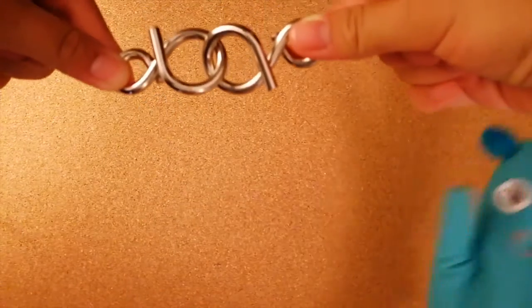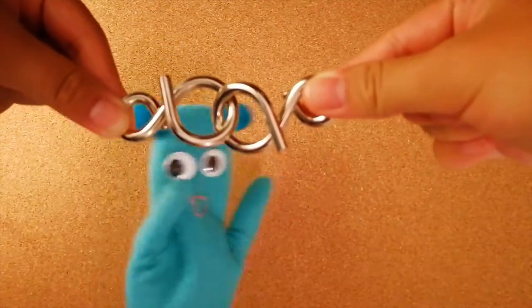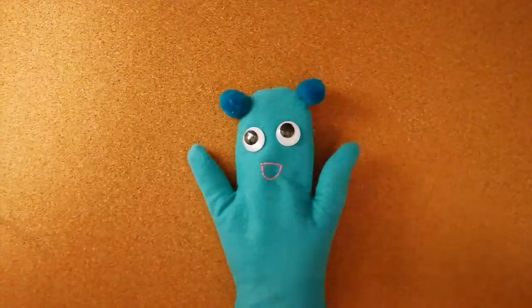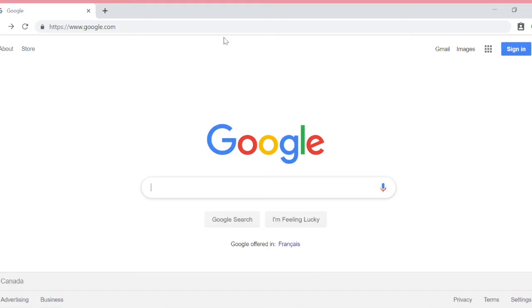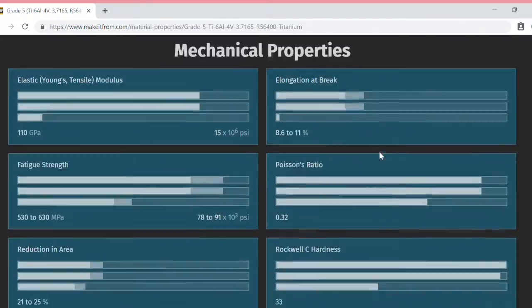Think of climbing a mountain. Fatigue strength would measure how much effort you have to exhaust before you totally break down. In the case of titanium, its fatigue strength is roughly 360 MPA.